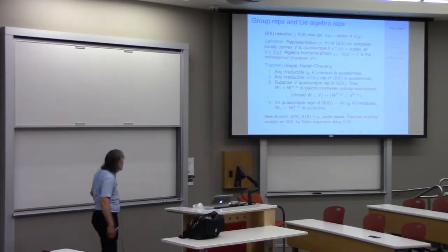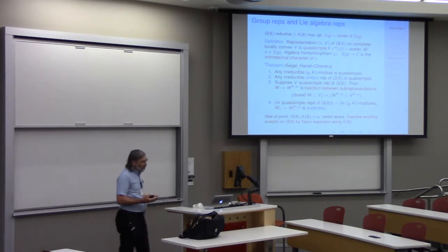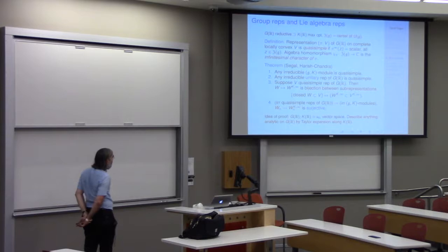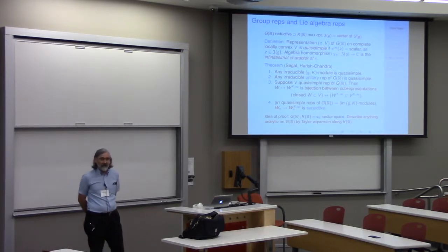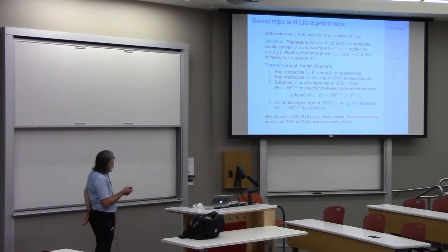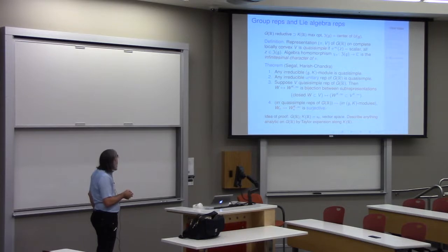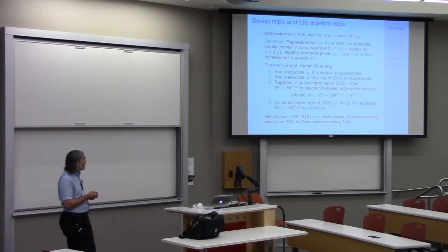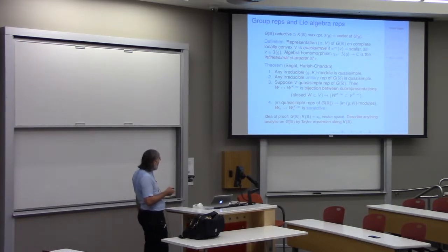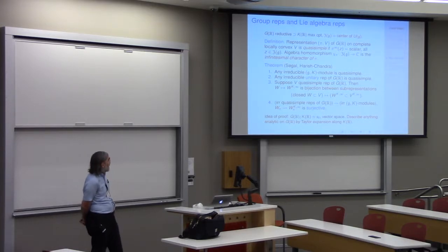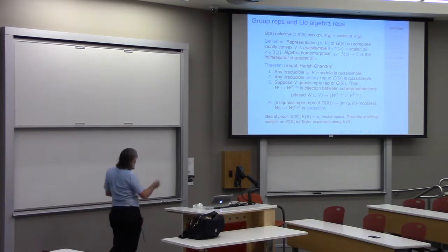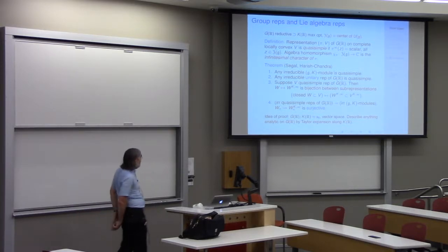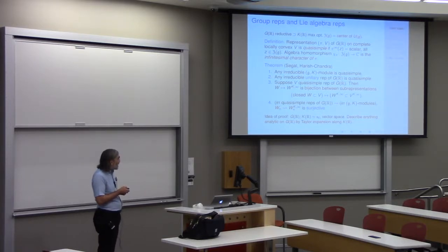This is the last slide that I showed the last time. It gave the Harish-Chandra formulation of the problem of what non-unitary representations one should look at. The big definition was that a representation is quasi-simple if the center of the enveloping algebra acts by scalars on the smooth vectors. Then there's the theorem of Harish-Chandra that says an irreducible quasi-simple representation gives you, by taking K-finite smooth vectors, an irreducible (g,K)-module.